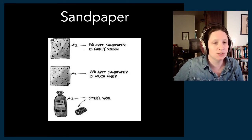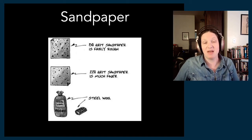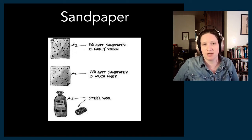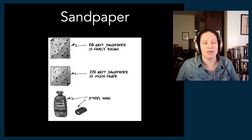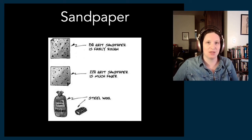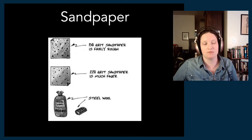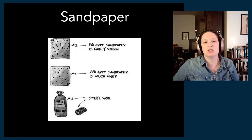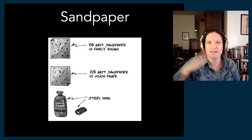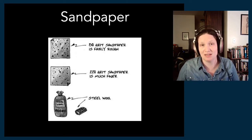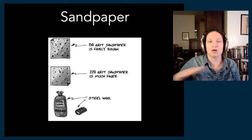Sandpaper itself comes in many different grits. 80 grit is rough with big chunks of sand; 220 grit is much finer; and then steel wool is even finer still. When you're sanding something, you start with the heaviest, roughest grit first — this is about removing material — and then move into 220 grit to get a nice even surface. Sometimes you even sand in between layers of finish to get that perfectly even surface on fine furniture.